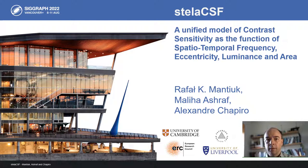Hello, I'm Rafał Mandiuk, a professor at the University of Cambridge. In this short presentation, I will talk about the contrast sensitivity function of the human visual system: what it is, why we should care about it, and how we can model it as a five-dimensional function of spatial and temporal frequency, eccentricity, luminance, and area. I am presenting this work on behalf of my collaborators, Maliha Ashraf at the University of Liverpool and Alexandre Shapiro at MET.